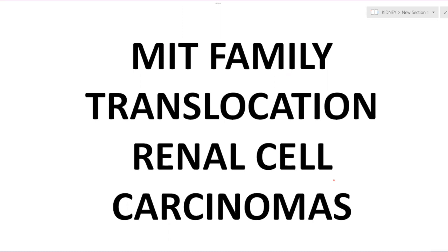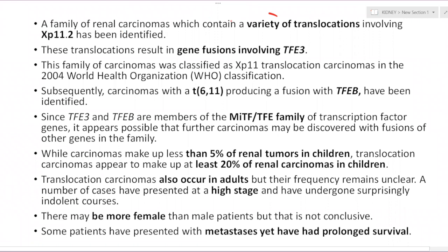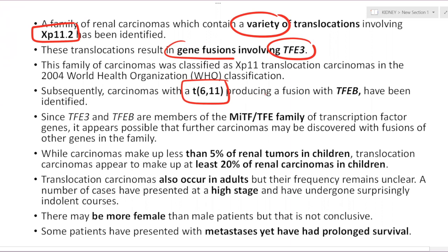MIT family translocation RCCs: a family of RCCs with various translocations involving Xp11.2, resulting in gene fusions involving TFE3. Translocation t(6;11) produces gene fusions involving TFEB. Both have been grouped under the MITF/TFE family of transcription factor genes. These carcinomas make less than 5% of renal tumors in children, but translocation carcinomas — including Xp11.2 and t(6;11) — constitute 20% of renal carcinomas in children. They also occur in adults, but in adults they present at a higher stage and are more common in females.